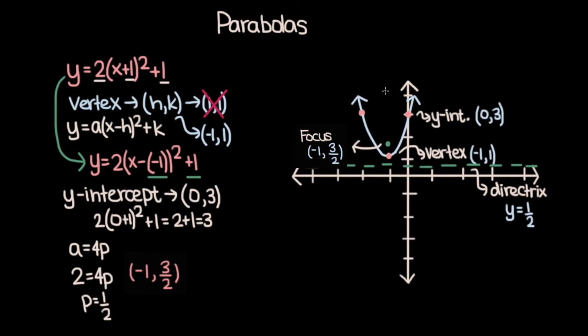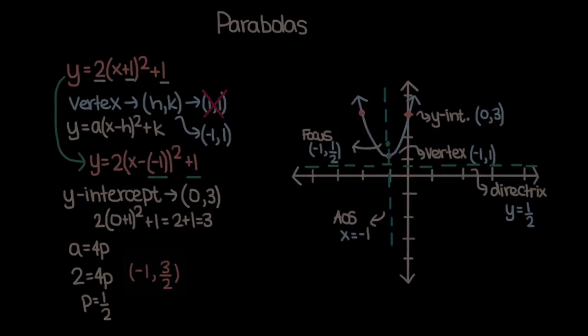Finally, we want to include the axis of symmetry, which is this vertical line. The axis of symmetry always has the same x value as the vertex, so in this case that's the line x is equal to negative 1. So there you have a complete sketch of the parabola 2 times x plus 1 whole squared plus 1. That's it for this video. If it helped you out, please be sure to leave a like, and if you want to be notified when I post more videos in this course, make sure to subscribe.